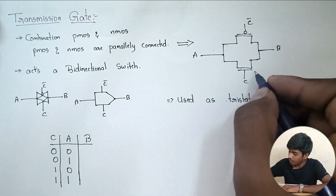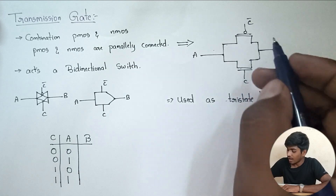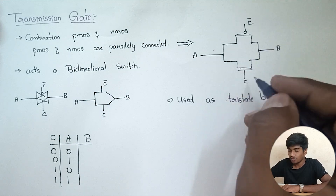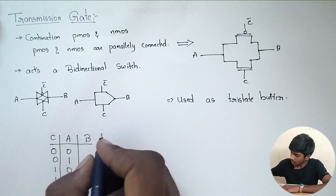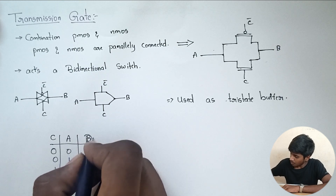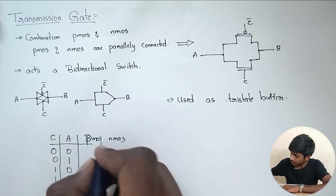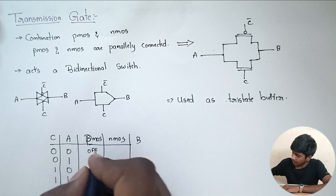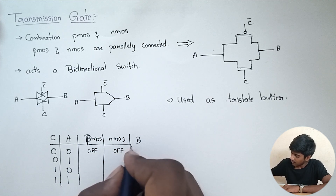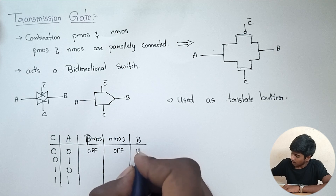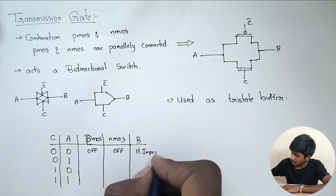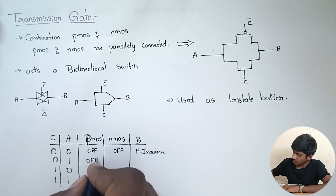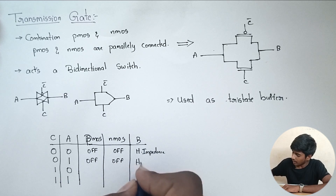When the control signal is 0, the NMOS will be in off state. Both PMOS and NMOS will be in off state. Since both are off, this acts as high impedance. Similarly, when the control signal is 0 again, this will be off — high impedance.